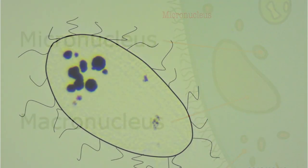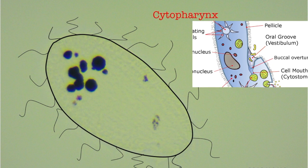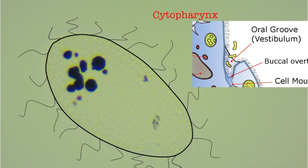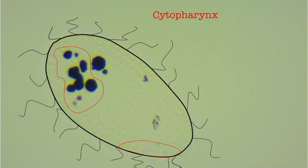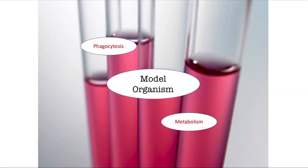Tetrahymena also have a cell mouth or cytopharynx for ingesting foreign material into the cell in a process known as phagocytosis. All these features make Tetrahymena a model organism for studying cytology and genetics in the lab.